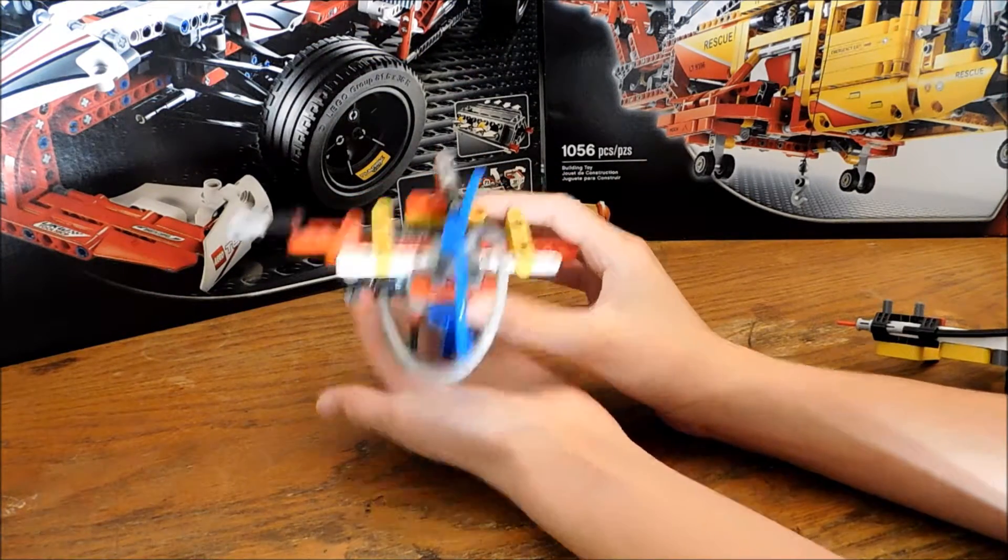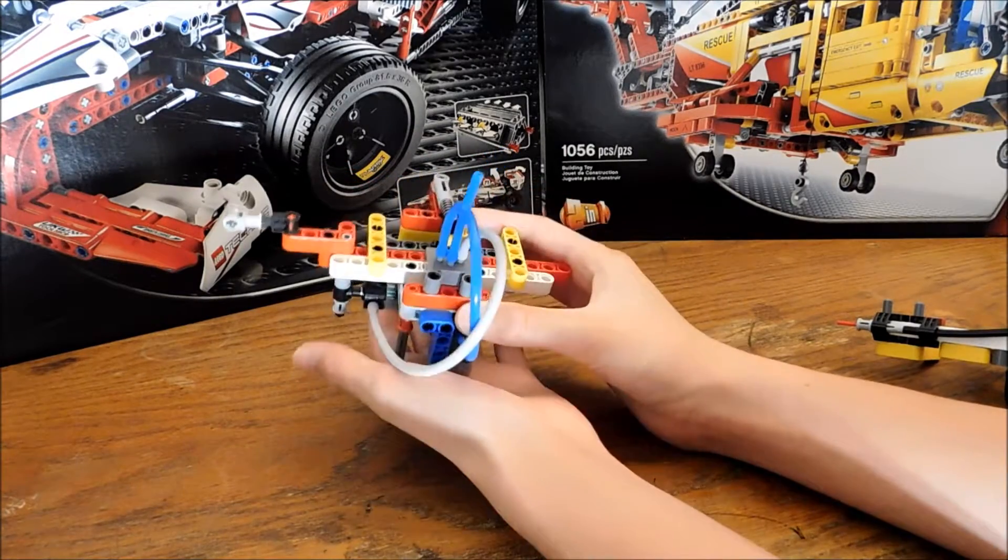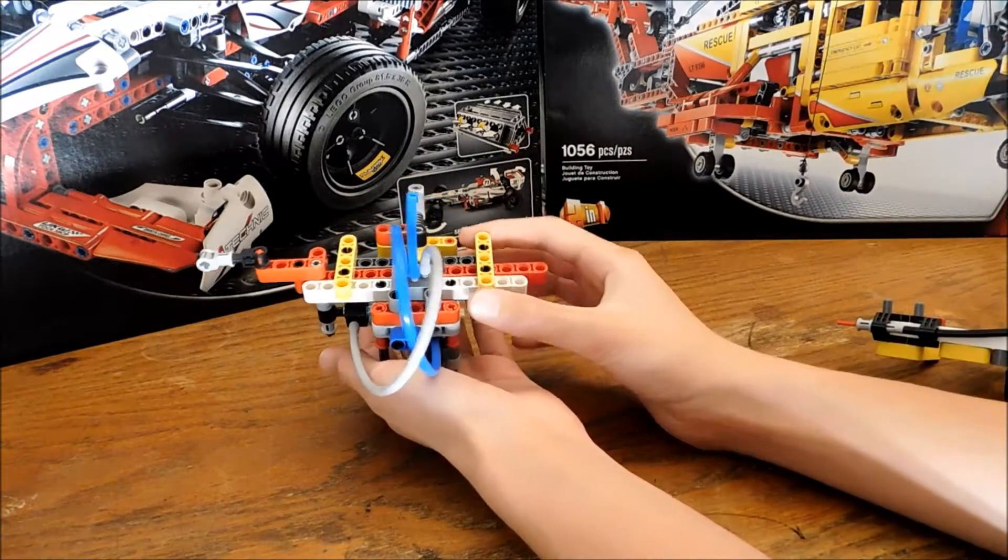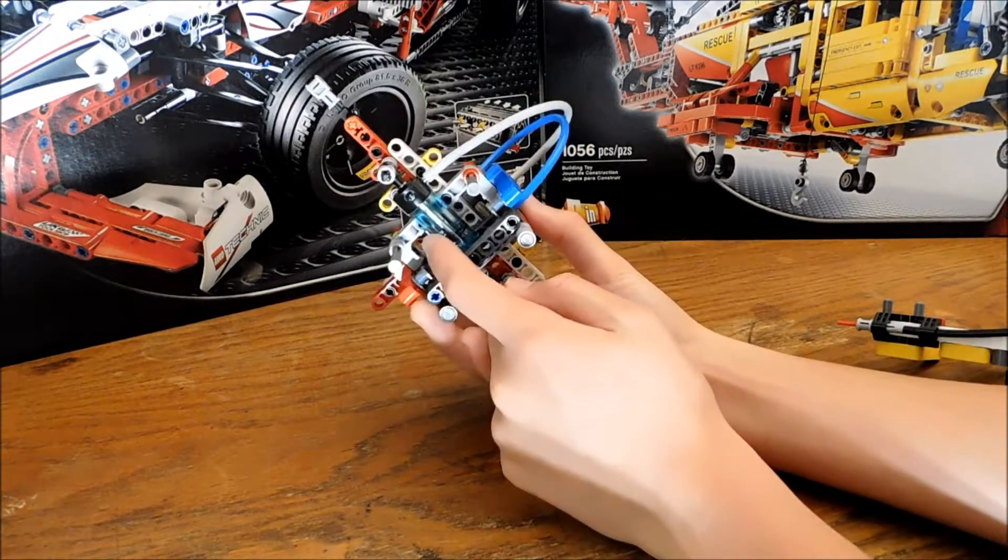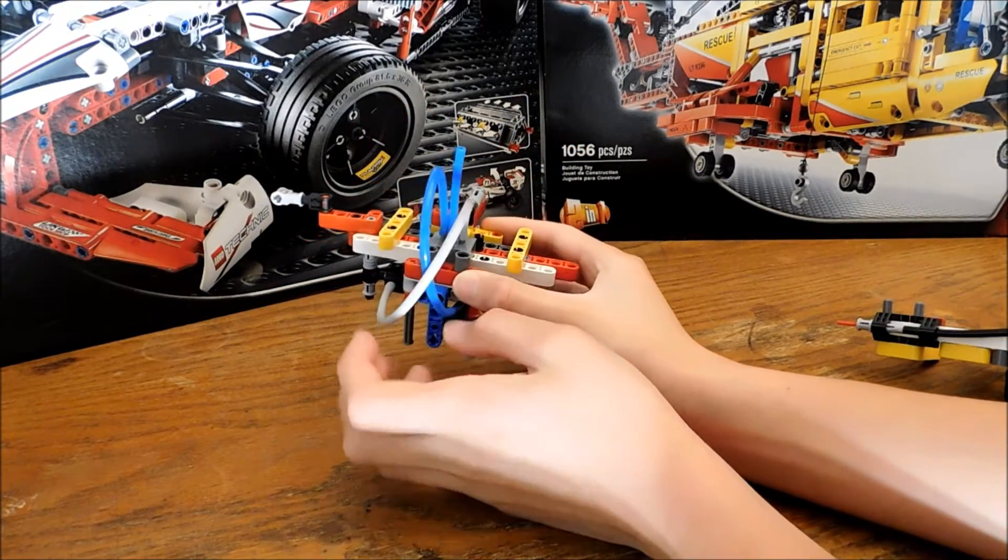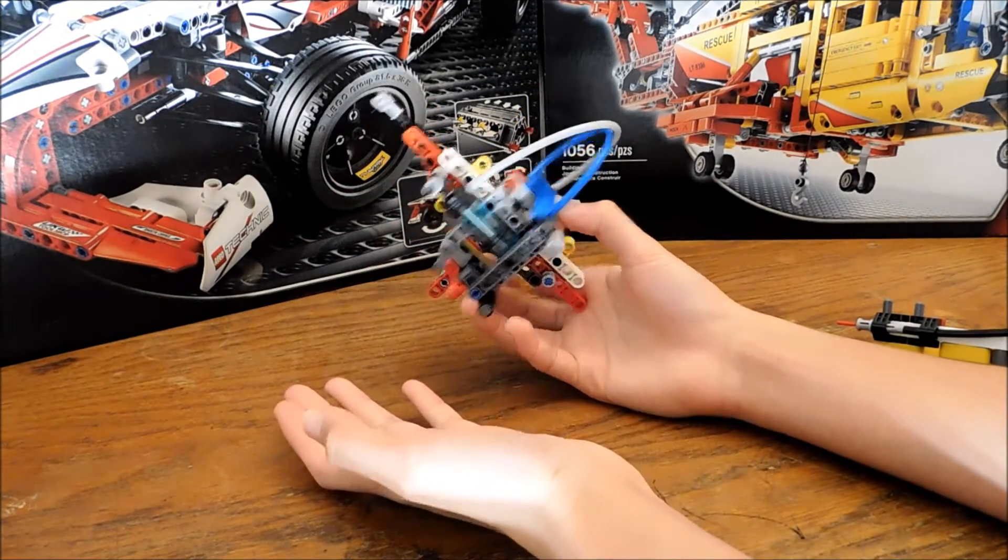This is my Lego Pneumatic Oscillator. It only uses a single cylinder and a single valve. I've seen designs before that used two cylinders and two valves, but I wanted to see if I could make one that only used a single cylinder and a single valve. That way it's more efficient because there's only one cylinder that the air supply needs to power.